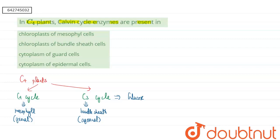So here in C4 plants, generally Calvin cycle enzymes will be present in the bundle sheath cells as it occurs in the bundle sheath of the plant. So here our correct answer will be second option, that is the chloroplast of the bundle sheath cells. So I hope this answered your question. Thank you.